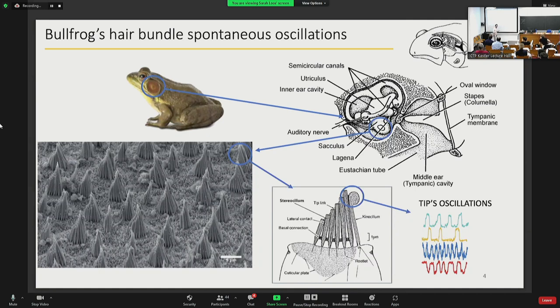Inside the sacculus of the inner ear of the bullfrog there is an epithelium of hair cells. Each of these cells has on its top a cylindrical structure called a hair bundle. This hair bundle consists of microtubules which are linked by elastic proteins called tip links, and it has a preferred symmetry plane along which the size of these microtubules increases. The tip of this hair bundle is able to oscillate in this plane.